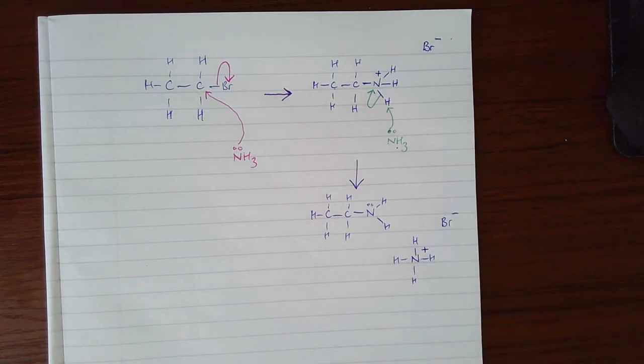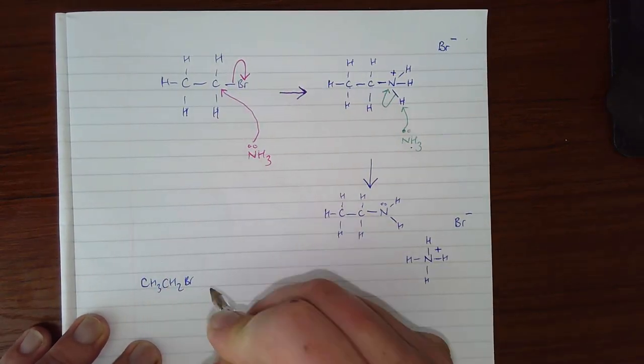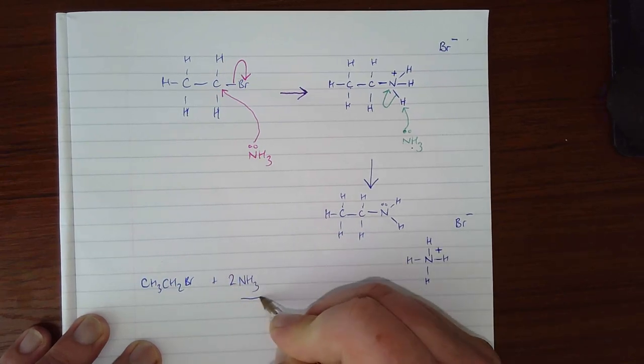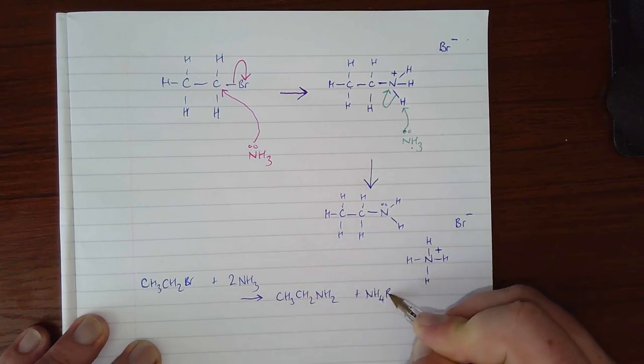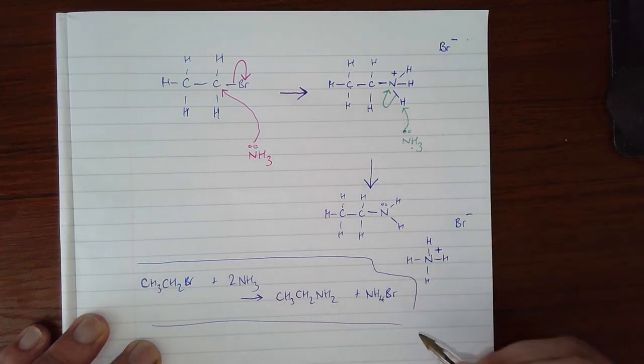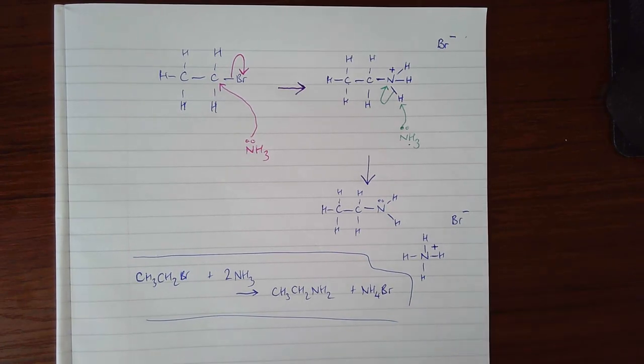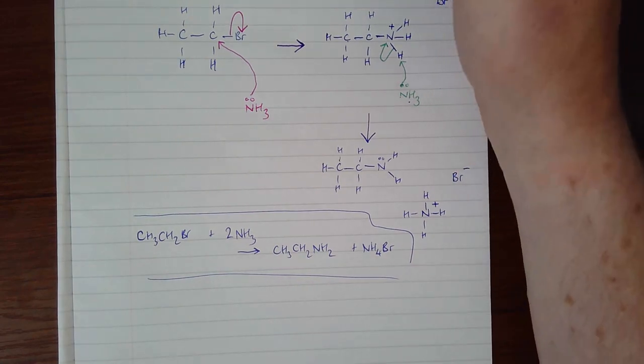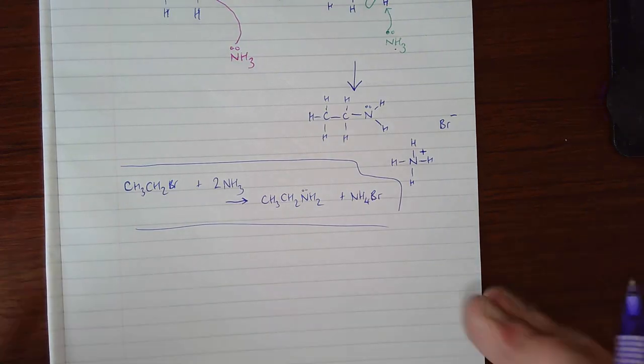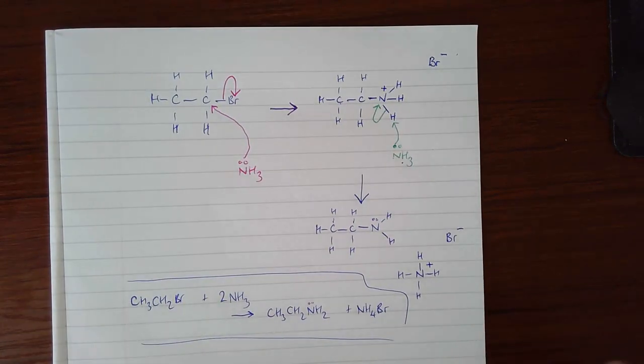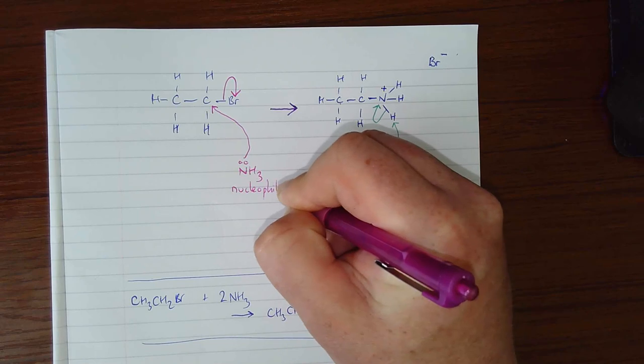The balanced equation for this reaction would be: CH₃CH₂Br plus two NH₃ gives CH₃CH₂NH₂ and ammonium bromide, which is ionic NH₄Br. Now the focus here is mechanism. The amine product here could then act as a nucleophile itself, so this is where further substitution comes along.